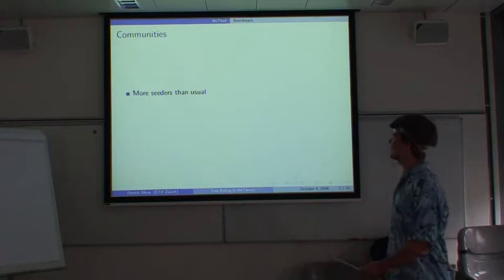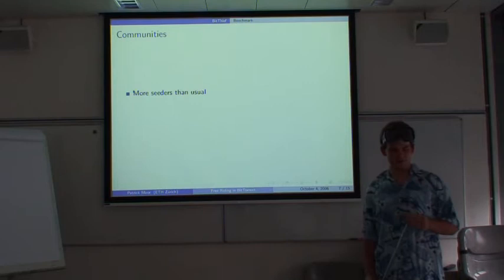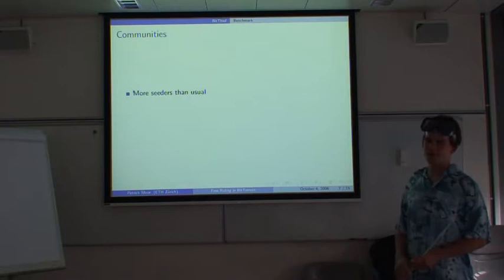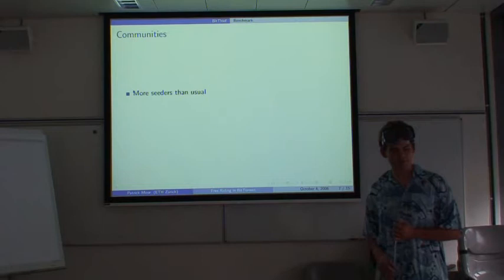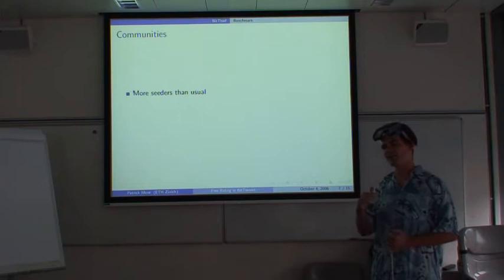And there are the BitTorrent communities. These are closed user groups where you have to get a login to download the torrents. And usually these communities offer the newest movies released, the newest music, etc. And there are several more advantages. There are usually way more seeders in these communities. Because, as I mentioned previously, you need to get a share ratio of above 1. So all these people in these communities try to upload as much as they can so that they keep their share ratio above 1.